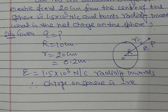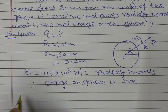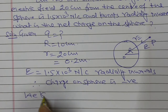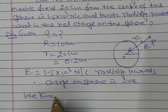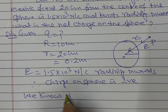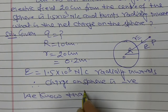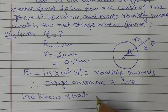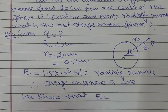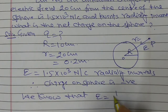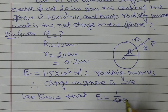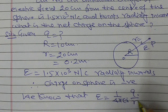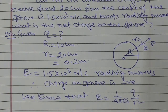Now, we know that the electric field E is equal to 1 upon 4 pi epsilon 0, into charge upon distance square.